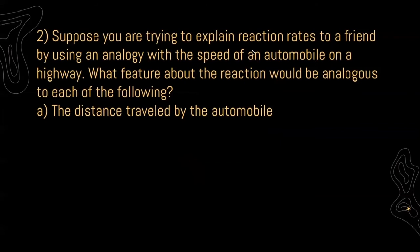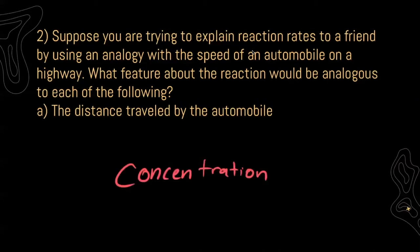For two, it says suppose you're trying to explain reaction rates to a friend using an analogy with the speed of an automobile on a highway. What feature about the reaction would be analogous to each of the following? For A, comparing the distance traveled by an automobile: distance is like concentration, because our concentration lets us know how much of our reactants or products we have, much like distance tells us how far we have to go.